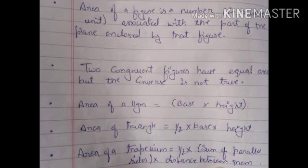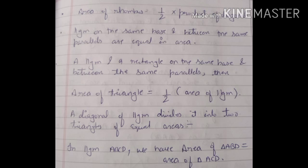Area of a parallelogram equals base into height. Area of a triangle equals half into base into height. Area of a trapezium equals half into the sum of the two parallel sides, multiplied by the distance between them. Area of a rhombus equals half into the product of the diagonals.